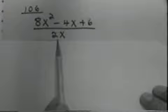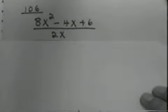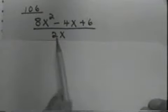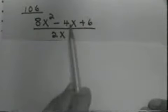Let's consider 8x squared subtract 4x plus 6 divided by 2x. I start the same way. I divide the 2x into each term.